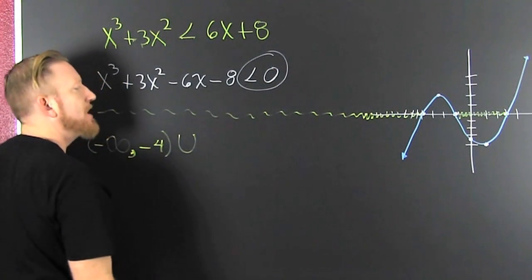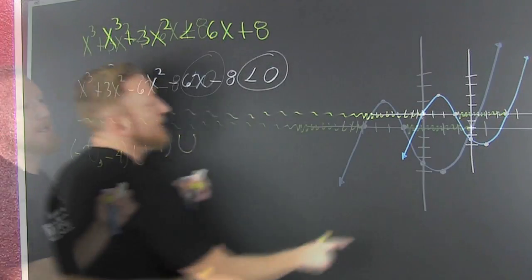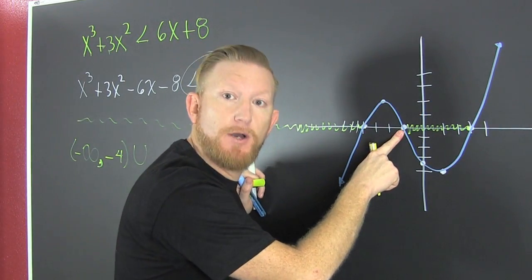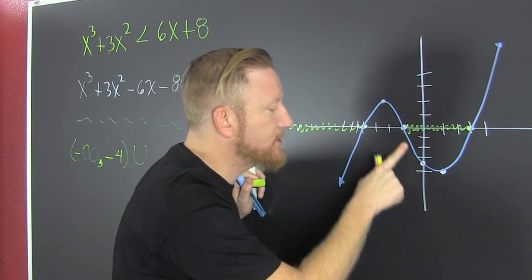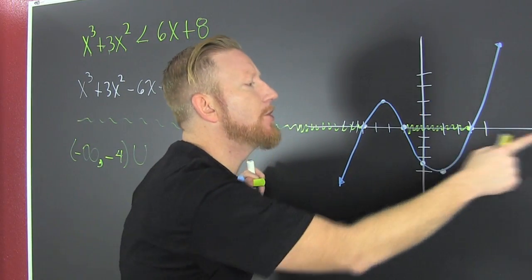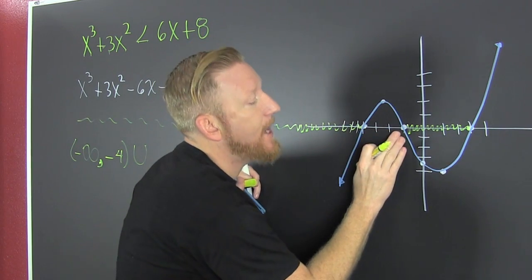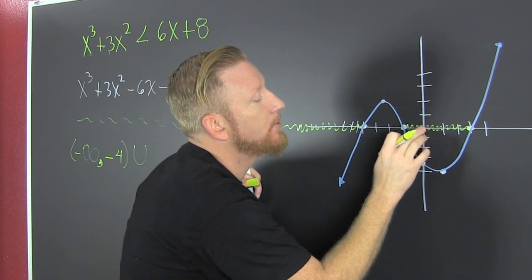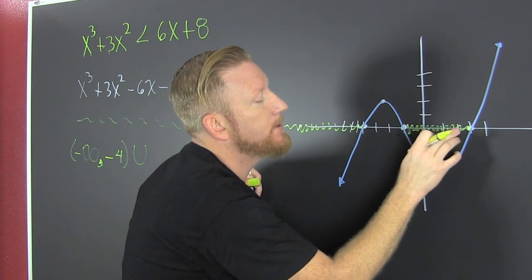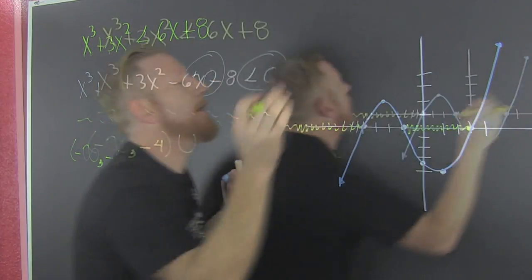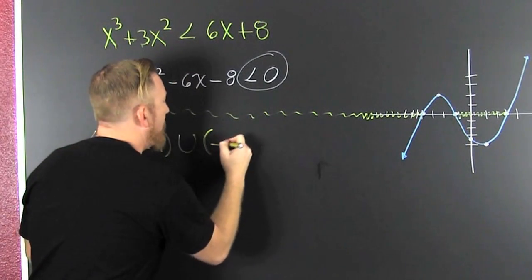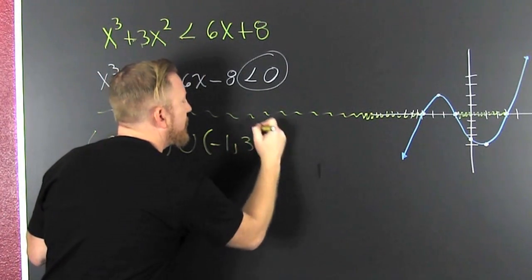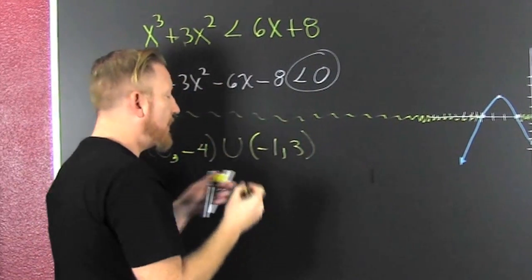Then I'm going to union that up with this: I'm looking for where it's below the line. This blue one is below that white one when x is in between minus 1 and 3. So that's minus 1 to 3 — union that up.